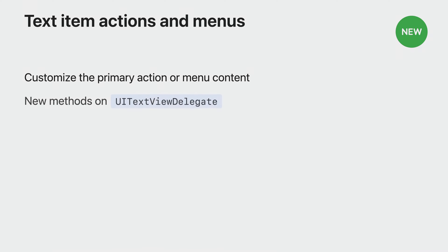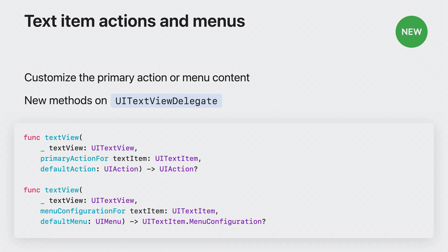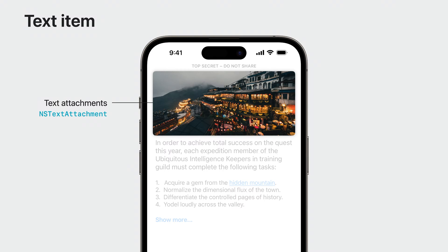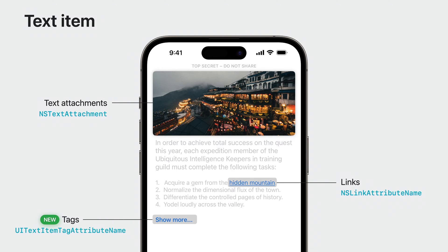In iOS 17, you now have the ability to customize item interactions for text items in text views. UI text view delegate has gained new methods to customize both the primary action or provide a menu for specific text items. Text items represent the content that supports item interactions. This includes text attachments represented by NS text attachment, and links represented by NS link attribute name. UI text item now also supports tagging custom ranges of text for interaction. To tag a range for interaction, use the UI text item tag attribute name on the attributed string representing the range of text you wish to make interactive.